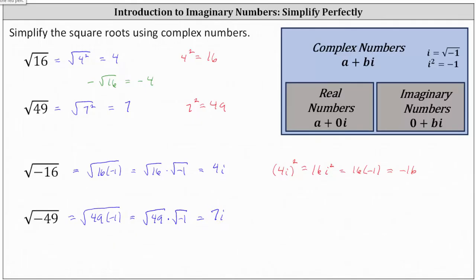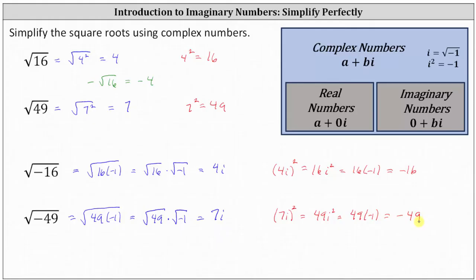Let's check this. The square of seven i must equal negative 49. The square of seven i is 49 i squared. Since i squared equals negative one, we get 49 times negative one, which is negative 49. I hope you found this helpful.